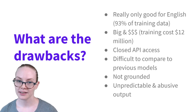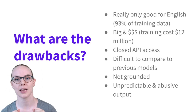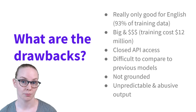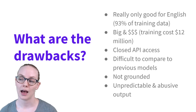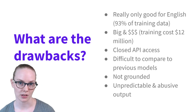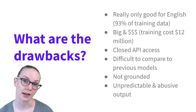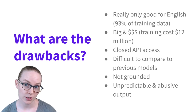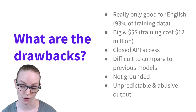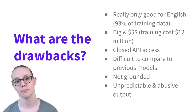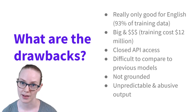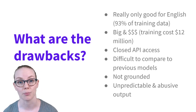Finally, something to be aware of is that the output will be unpredictable. Also, given the training data and the model, there is abusive language that could be output, as well as a lot of negative stereotypes — racism, sexism, homophobia. So that's very important to know.